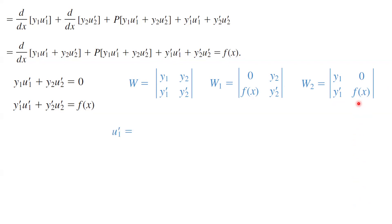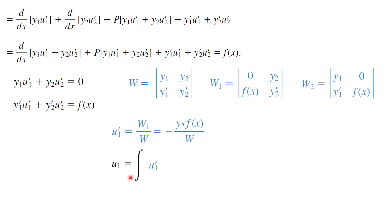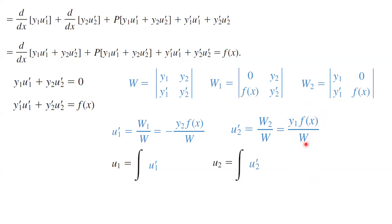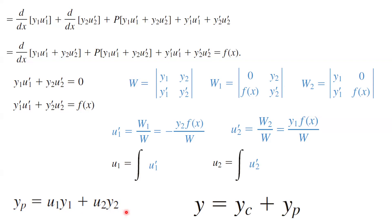Using these pieces of information, the derivative of u1 is W1 divided by W, which in turn equals negative y2*f of x on the numerator divided by the Wronskian. Then u1 is nothing but the integral of u1 prime. u2 prime is W2 divided by the Wronskian, which equals y1*f of x on the numerator divided by the Wronskian, and u2 is the integral of its derivative. Then you can write the particular solution as u1*y1 plus u2*y2, and the general solution is the complementary solution plus this particular solution.